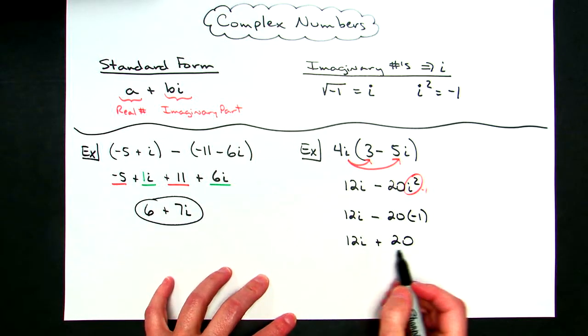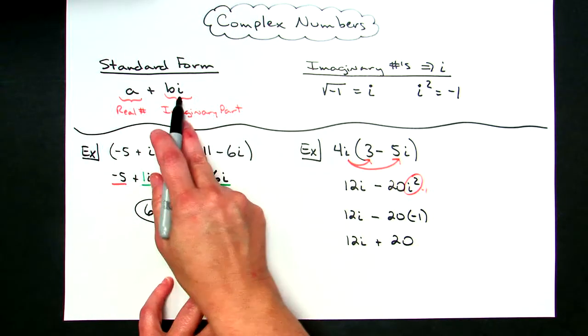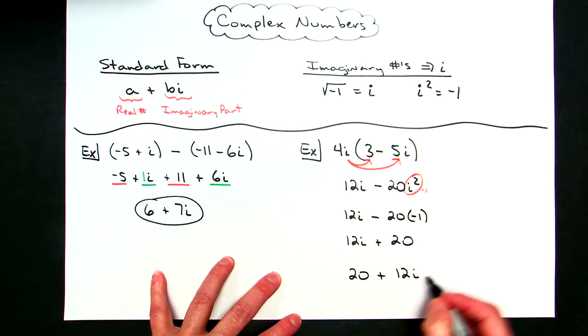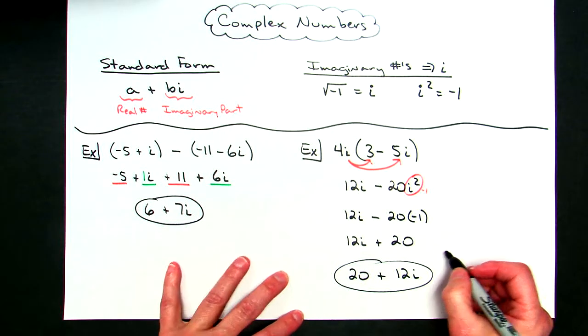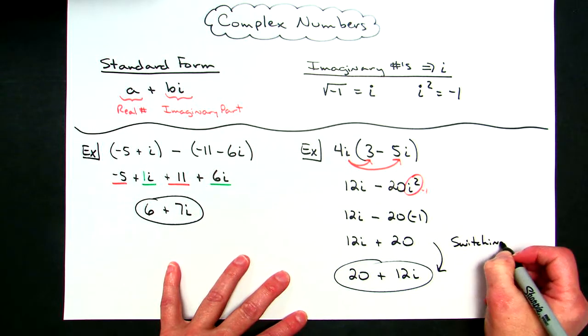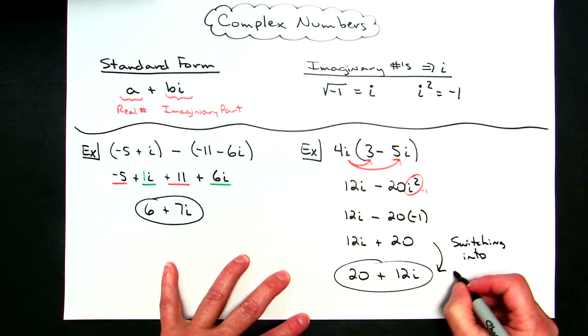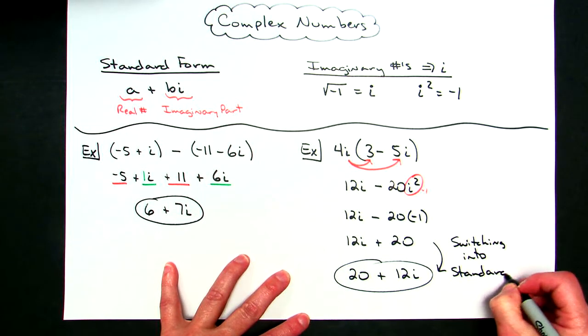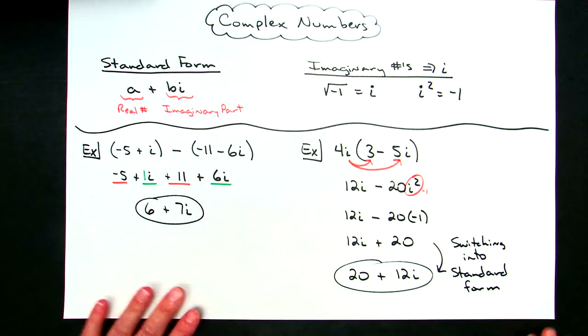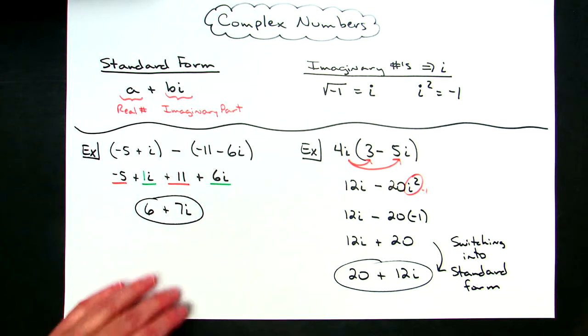This is not yet in standard form — I don't have it in A plus Bi form. So I need to rearrange those terms to get 20 plus 12i. A lot of textbooks require your answer to be in standard form, so that's why I point that out. Now let's take a look at another example. If I had two quantities being multiplied together, I would use FOIL.